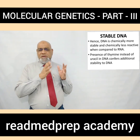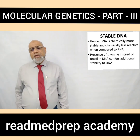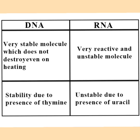The presence of thymine instead of uracil in DNA confers additional stability to DNA. Comparing the stability between DNA and RNA: DNA is a very stable molecule and does not degrade even on heating, whereas RNA is a very reactive and unstable molecule. The stability of DNA is due to the presence of thymine, while the instability of RNA is due to the presence of uracil.